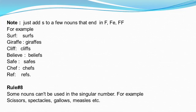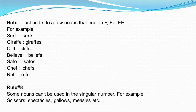Rule number 8: Some nouns cannot be used in the singular number. For example, scissors, spectacles, gallows, measles, etc. Now let's discuss kinds of nouns. As you know, there are five kinds of nouns: common noun, proper noun, abstract noun, material noun, and collective noun.